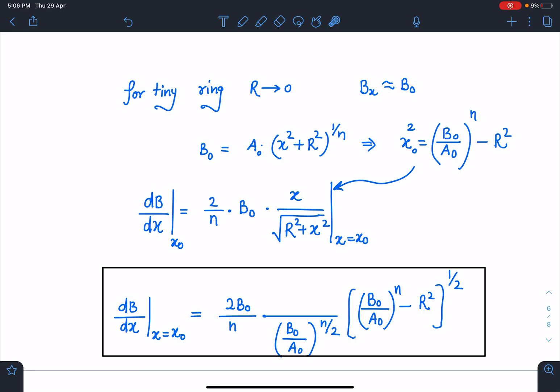The x coordinate at which ring is placed is given by x₀² = (B₀/A₀)ⁿ - r². This coordinate is known to you, so we can find out the value of dB/dx at that particular coordinate, and it comes out to be a very big expression. However, expression-wise we are not so interested, but the overall concept of this problem is important application.